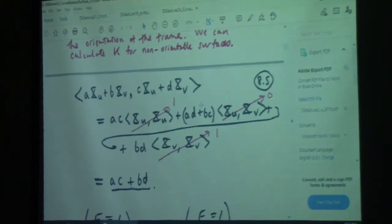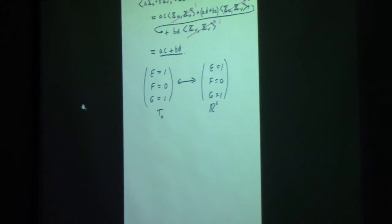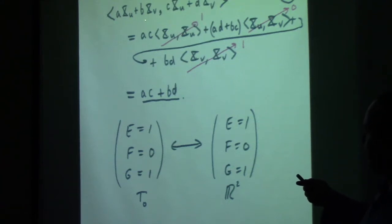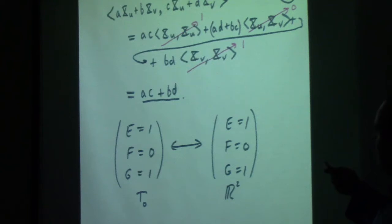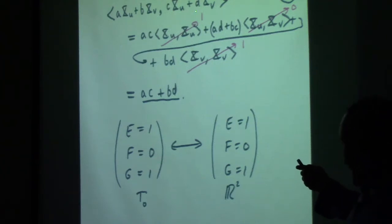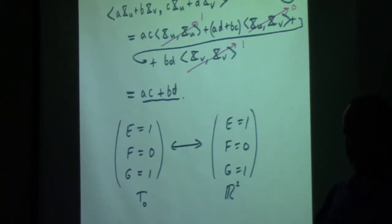If you've got a surface with a patch, then x_u and x_v are linearly independent at each point because it's a regular map, and those form a basis for the tangent space. If you can define a formula for that basis — specifying the inner products x_u·x_u, x_u·x_v, and x_v·x_v as E, F, and G respectively — then if you give E, F, and G, this formula shows you how to define the metric on the surface using the warping functions.